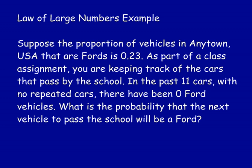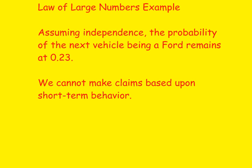Assuming independence — meaning the car that went by was not the same one that came back — the probability of the next vehicle being a Ford would remain 0.23. We cannot make claims based upon short-term behavior. Even if 25 cars in a row went by that were Fords, the next one still has a 0.23 chance of being a Ford.